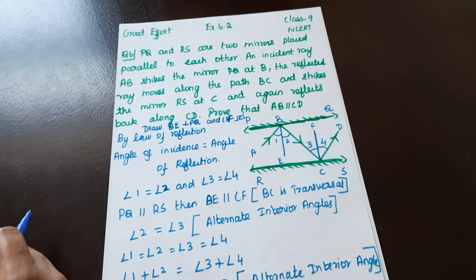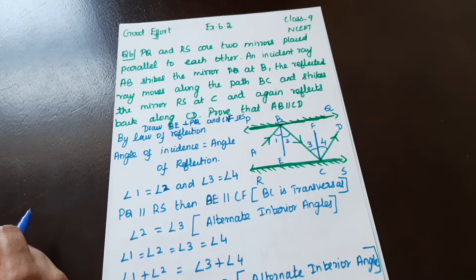PQ and RS are two mirrors placed parallel to each other, and incident ray AB strikes the mirror PQ at B. The reflected ray moves along the path BC and strikes the mirror RS at C, and again reflects back along CD. Prove that AB is parallel to CD.